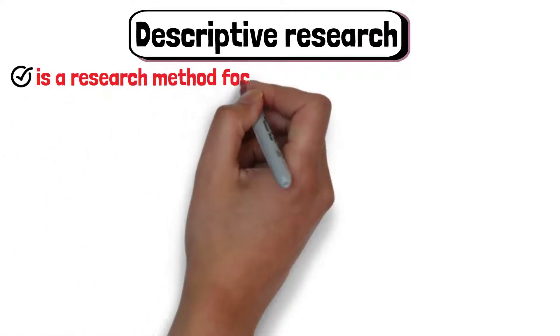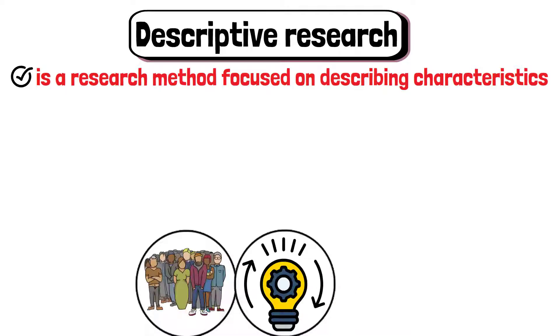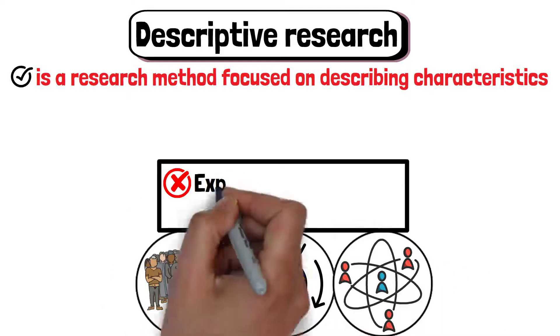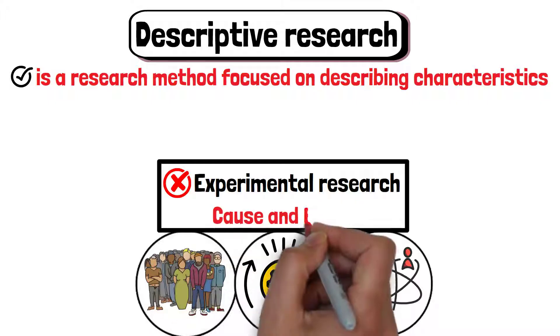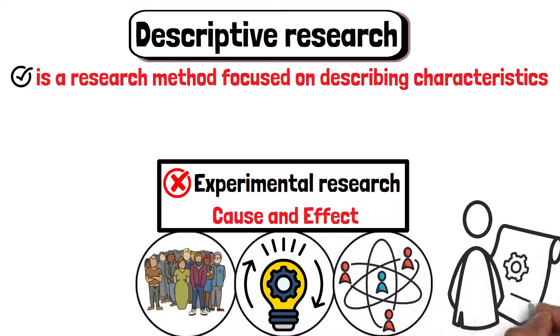Descriptive research is a research method focused on describing characteristics of a population, phenomenon, or situation. Unlike experimental research, it doesn't seek to determine cause and effect, but rather aims to provide a detailed factual account of a subject.